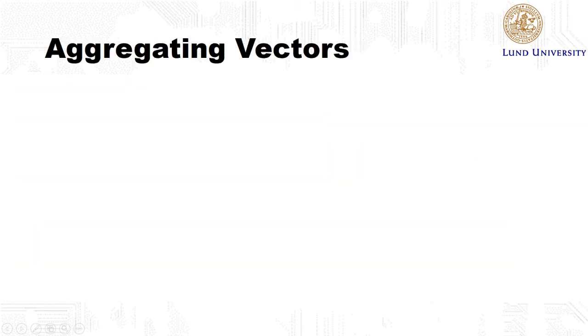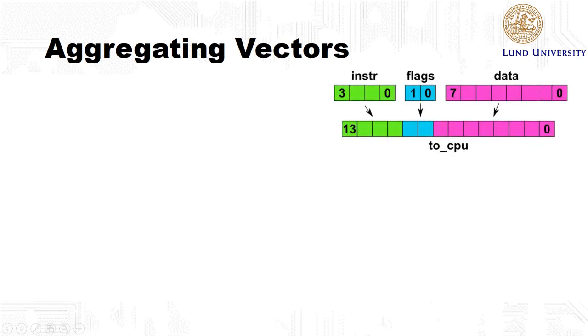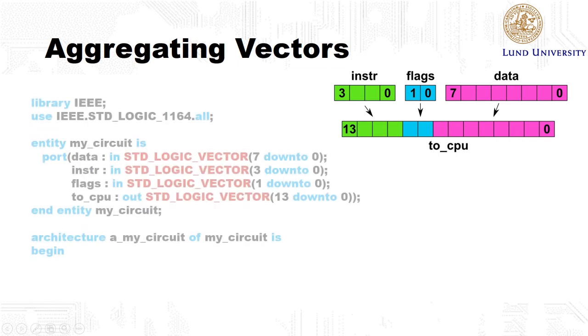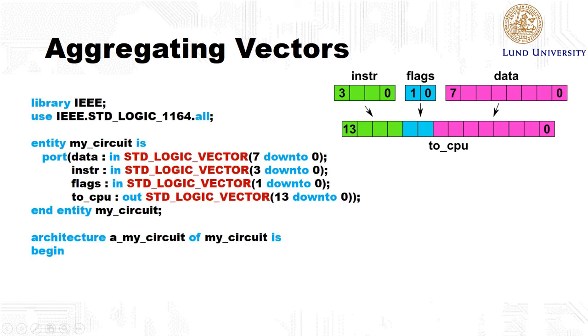Aggregating vectors means that you take smaller vectors and glue them together to get a wider vector. This is quite common in VHDL. In this example, we will take three vectors and glue them together. So we have the first vector, which is 4-bit wide, which is an instruction vector. Then we have some flags, which is 2-bits wide. And we have a data vector that is 8-bits wide. And now if we would like to put these together to form a single vector, we can use the ampersand symbol in VHDL.